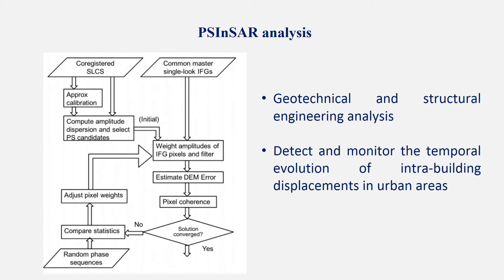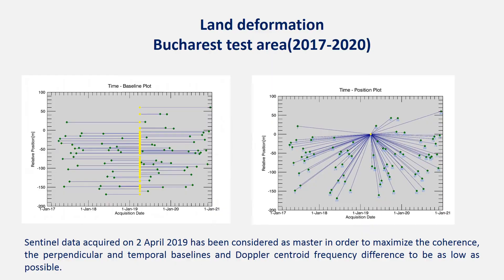We take into account in our analysis geological and structural engineering aspects. We try to detect and monitor the temporal evolution of ground displacement in urban areas. We set the master image acquired in September 2019 in order to maximize coherency and to keep perpendicular and temporal baseline and Doppler centroid frequency differences as low as possible. For example, we set the coherency threshold at 0.75 to capture building instability from the city centre.